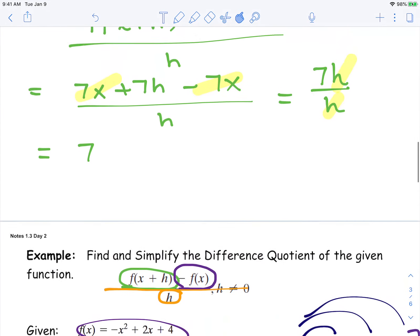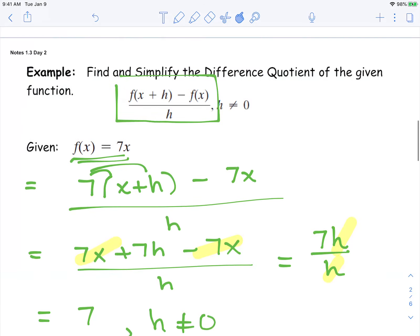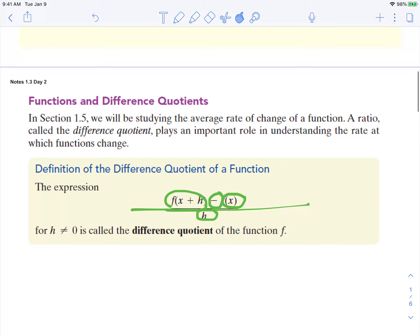We also need to go back to this problem here and also say that h cannot be 0 because it would make that fraction undefined. So that is your difference quotient.